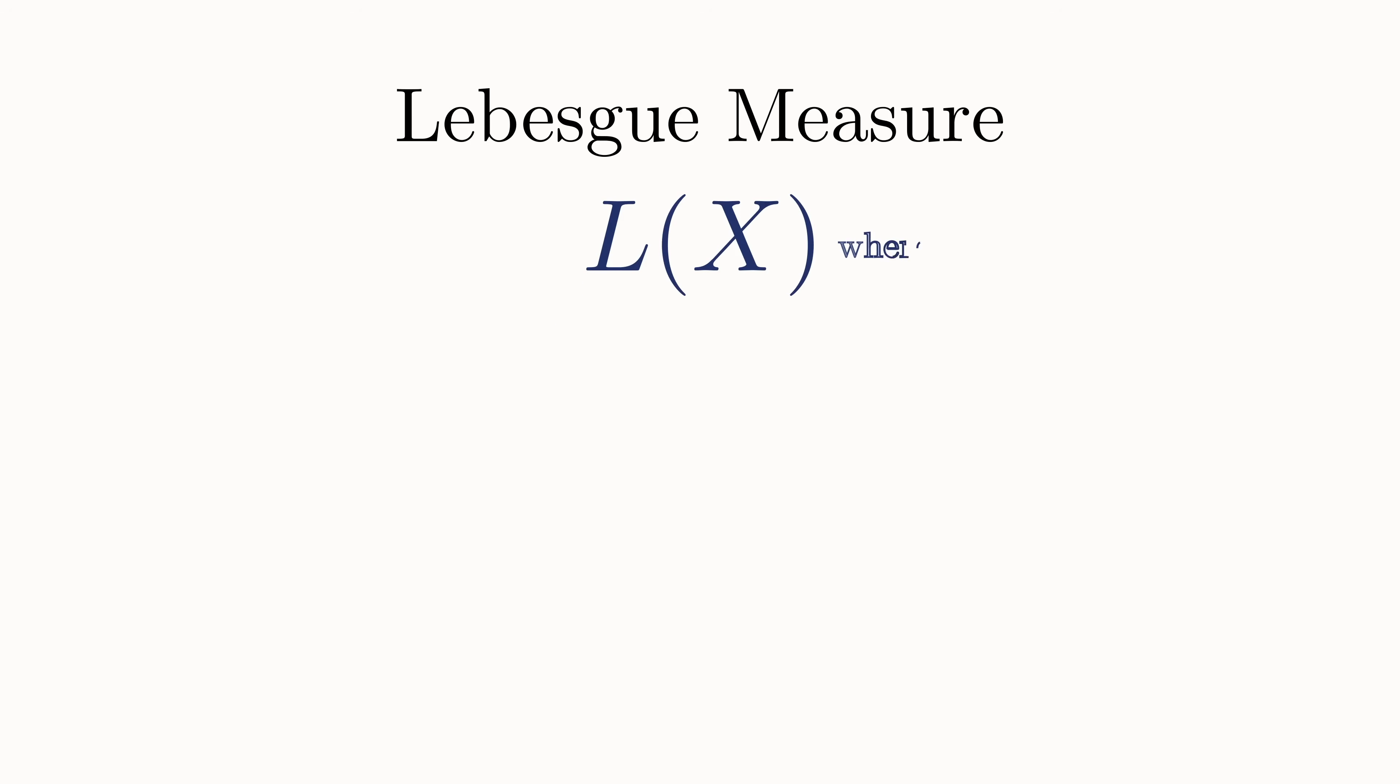We refer to the size or the Lebesgue measure of a set using this notation. L is just a function that takes in a set and spits out some number that is the size of the set, so it can be anywhere between zero and infinity. And there are three basic rules that the Lebesgue measure obeys.